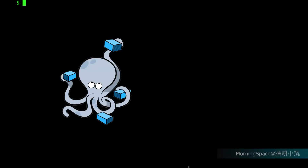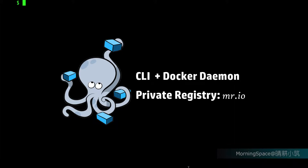Another way to run the CLI is to clone the GitHub repository directly to local, then use Docker Compose to run it. The Docker Compose YAML file includes the CLI with a Docker daemon wrapped as a container and a simple private registry for testing purpose, where the host name is mr.io.